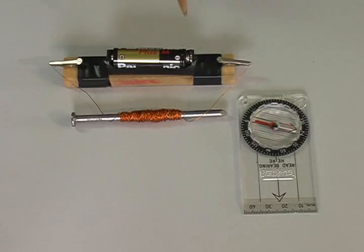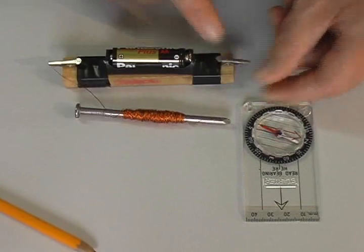We know that electricity, flowing electrons, moves from the minus end of the battery toward the plus end. The electricity moves from this end of the battery, through the coil, back to the plus end. Let's see if changing the battery connections affects the polarity of our magnet.